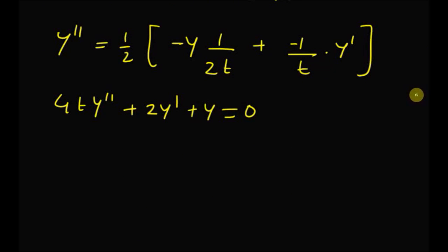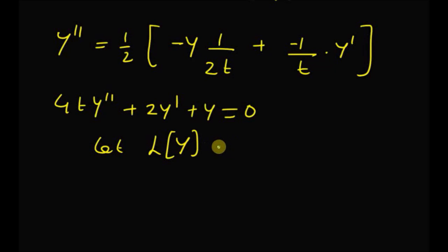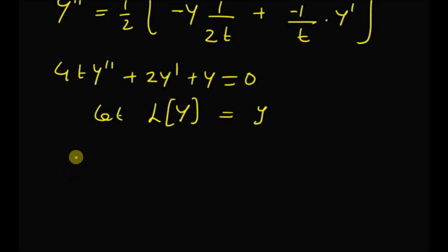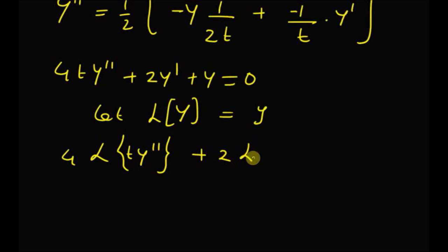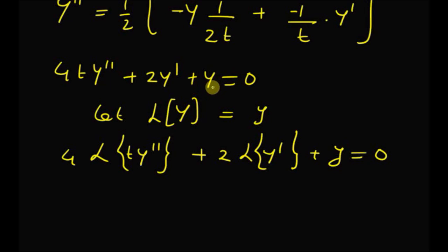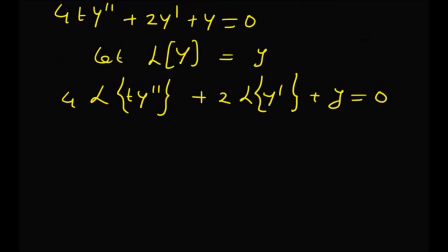Now we can use the properties related to differential equations to find the Laplace transform. Let the Laplace transform of y(t) be lowercase y. We take the Laplace transform of the equation: 4 times the Laplace transform of t·y'' plus 2 times the Laplace transform of y' plus lowercase y equals 0.